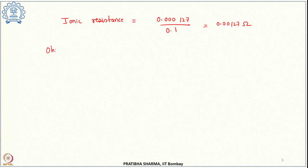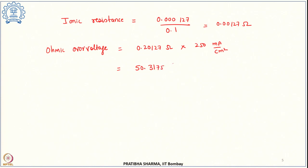The ohmic overvoltage is the sum of the two resistances times the current density, which gives 50.133175 millivolt per centimeter square. Since the area is 1 centimeter square, this comes out to be 0.05 volt of ohmic overvoltage.